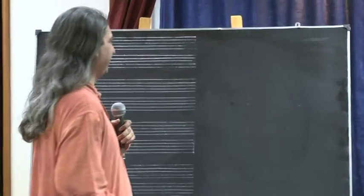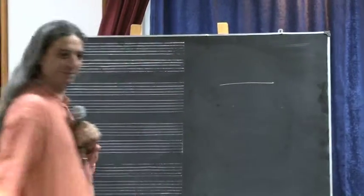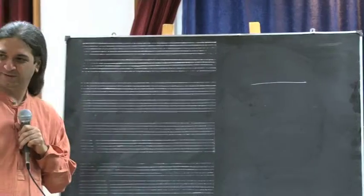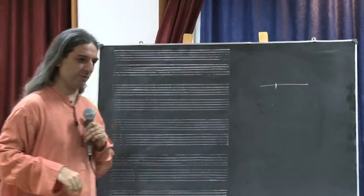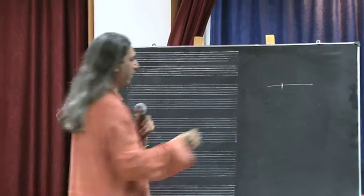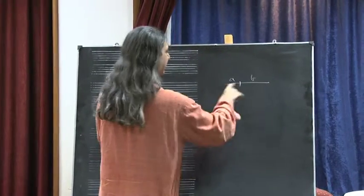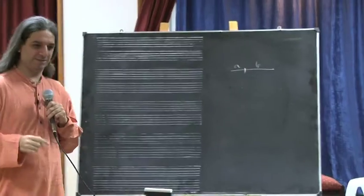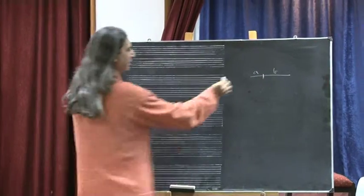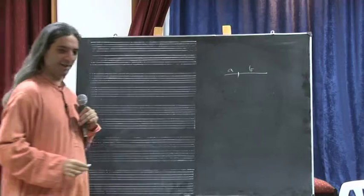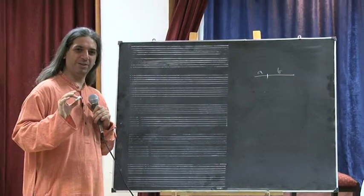Now, (a + b) whole squared. If I have a line and an arbitrary point, I call this 'a' and this 'b', then this length is a plus b. Agreed?